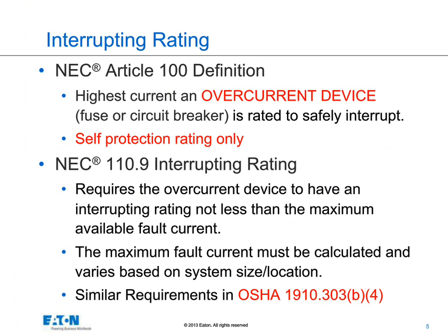NEC 110.9 requires the interrupting rating of the overcurrent device to be adequate — equal to or greater than the maximum available fault current. To determine the maximum available fault current, you would have to do a calculation based upon the size of your system and where you're located in your system. There are similar requirements in OSHA 1910-303-B4. Whether it's a new installation per the NEC or an existing installation per OSHA, we need to make sure our overcurrent devices have adequate interrupting rating so we don't have a potentially explosive situation. If they experience fault current above their interrupting rating, they can actually explode.